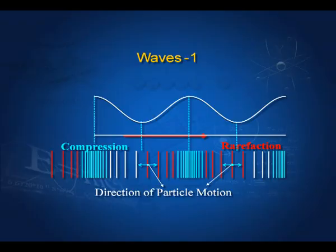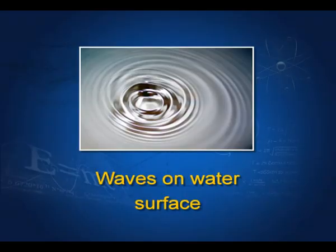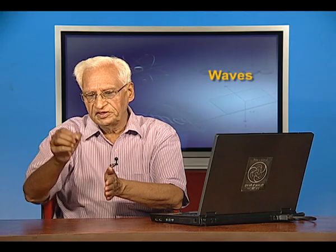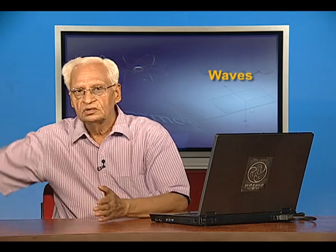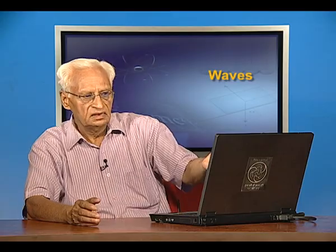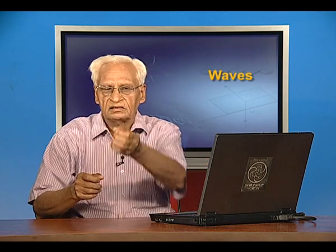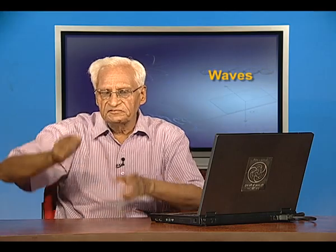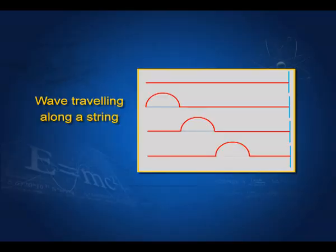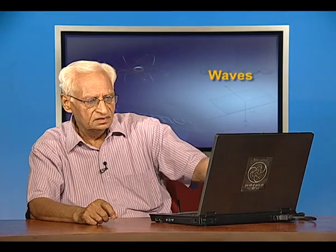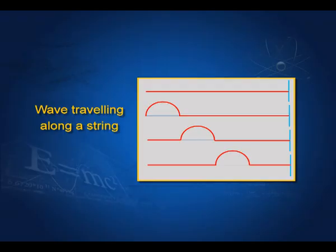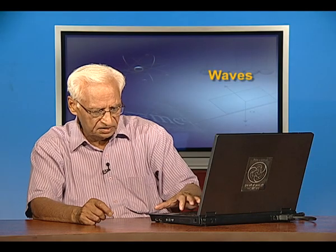Now we take up waves. Waves you are all familiar with. I am showing you these are water waves. If you throw a pebble in a pond, you can see that a wave train travels from that point where you threw the pebble to the edges of the pond in all directions. You can also have a string tied at one end and then give it a jerk. You will see a wave travelling along the string — a disturbance travelling along the string.